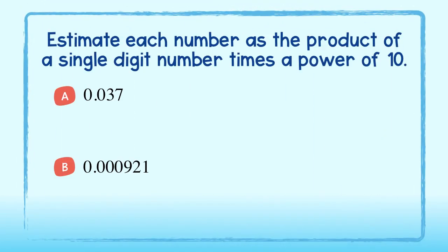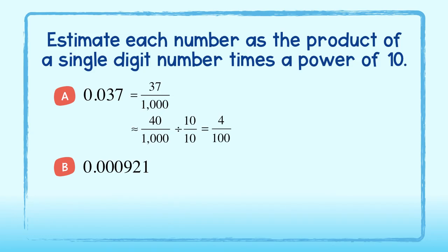Estimate each number as the product of a single digit number times the power of ten. For part a, let's first write thirty-seven one-thousandths as a fraction. This rounds up to forty one-thousandths. Simplifying, we get four one-hundredths. Writing this as a multiplication problem, we get four times one-hundredth, or four times one over ten to the second power. Using our negative exponent rule, we bring the power of ten to the numerator and get four times ten to the negative second power.